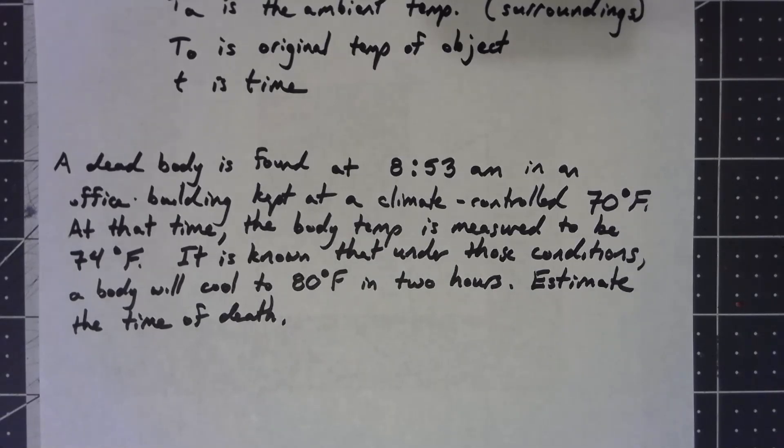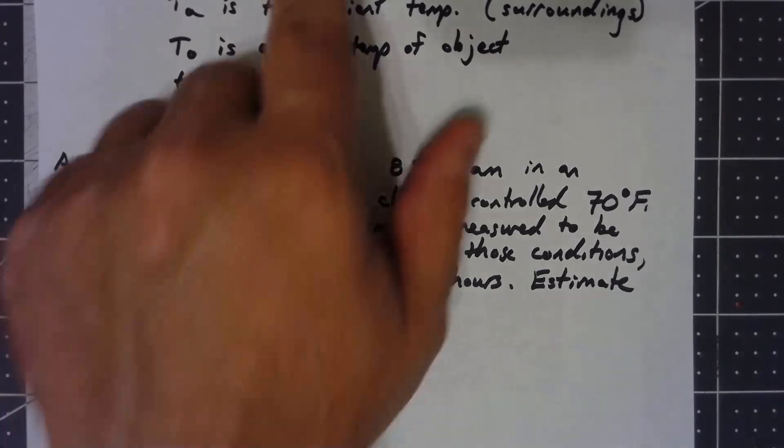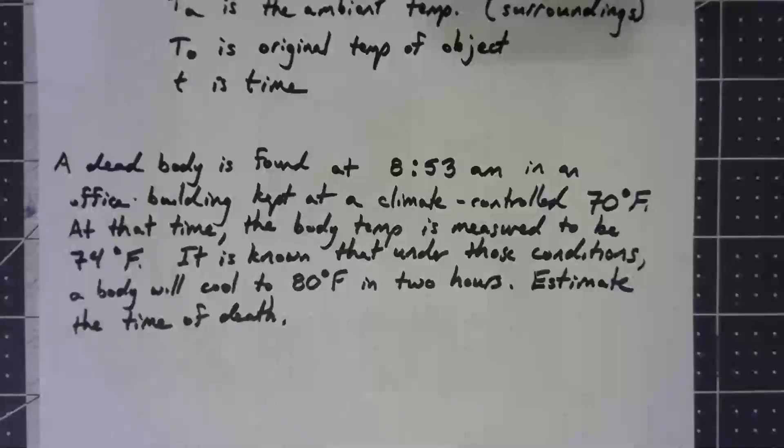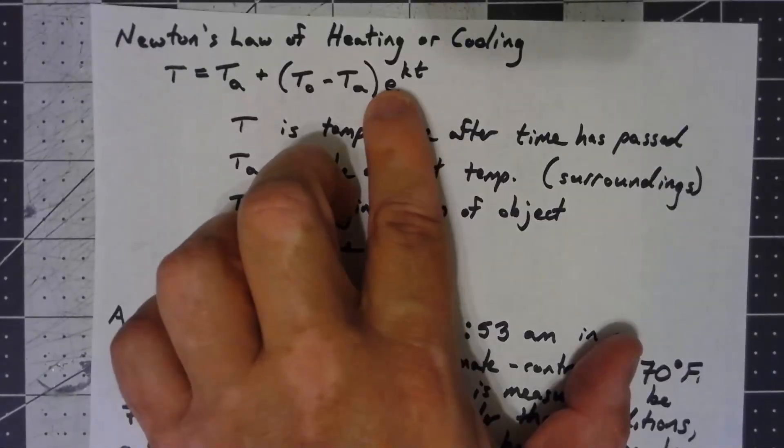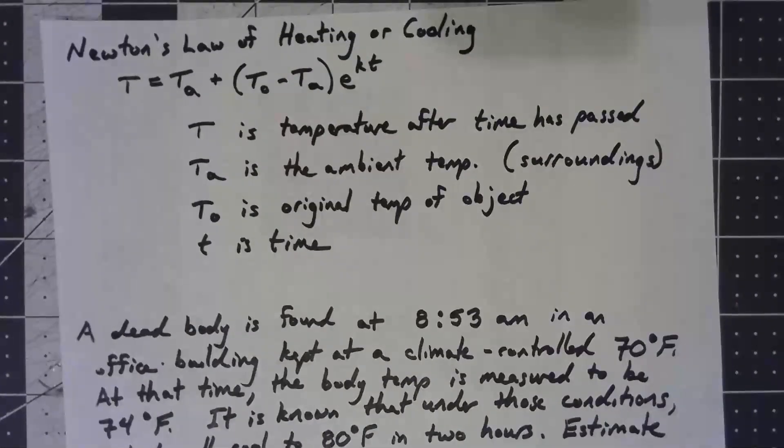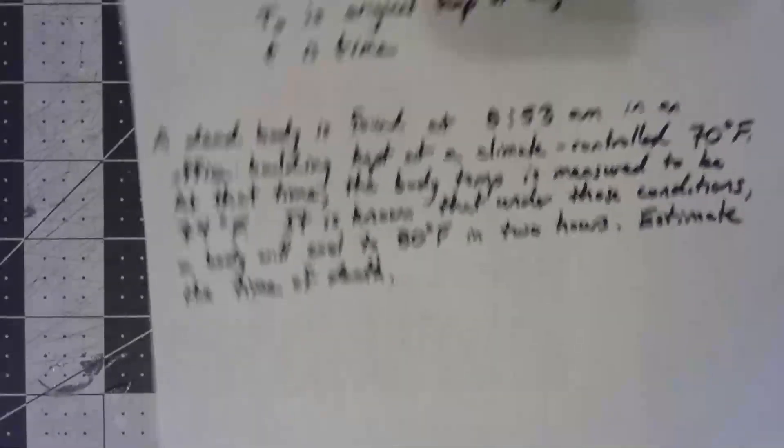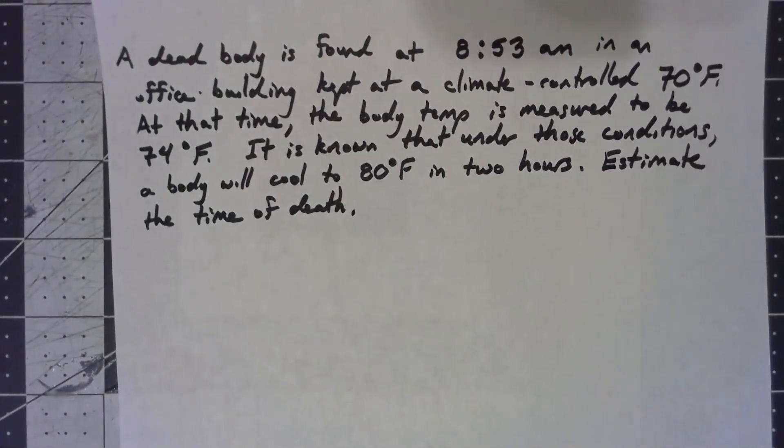Just like the other problems we've done, we first have to figure out what is this K value in our formula. That K is a constant which we need to figure out using known information.